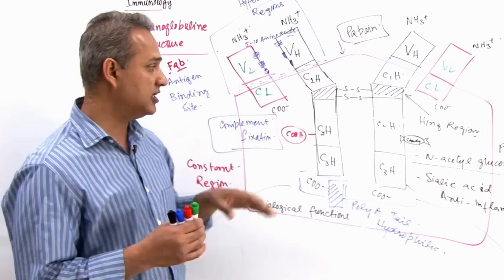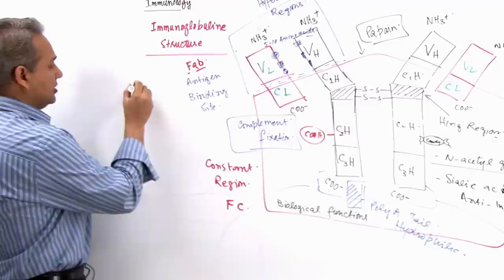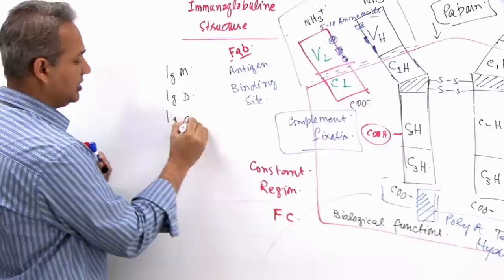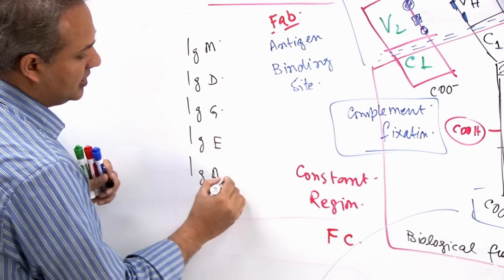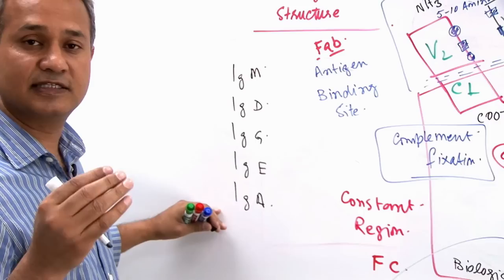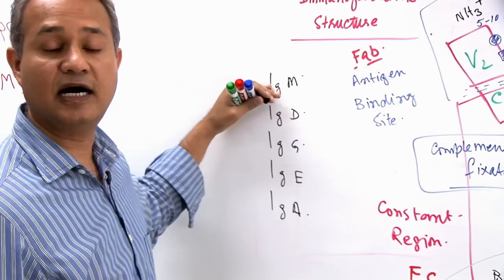Heavy chains are of five types. These five types are IgM, IgG, sorry, IgD, IgG, IgE and IgA. So, this sequence that I wrote is different from the sequence that is found in the books and that is used in teaching. I wrote this sequence. Why I like this sequence is that this is how the genes are arranged for the immunoglobulin heavy chains.